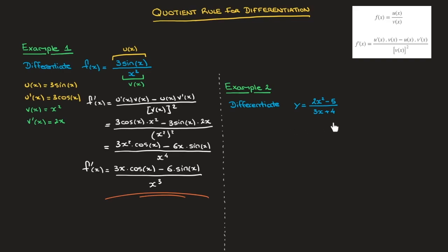Let's look at the second example. We need to differentiate y, which is equal to 2x squared minus 5, over 3x plus 4. Again, we can see that we're dealing with one function being divided by another, so I'll go ahead and call the numerator u and the denominator v. Just as I did for the first example, the first thing I'll do is get the derivatives of both u and v out of the way.